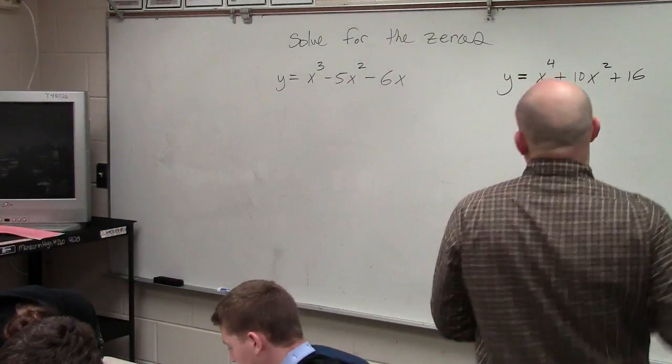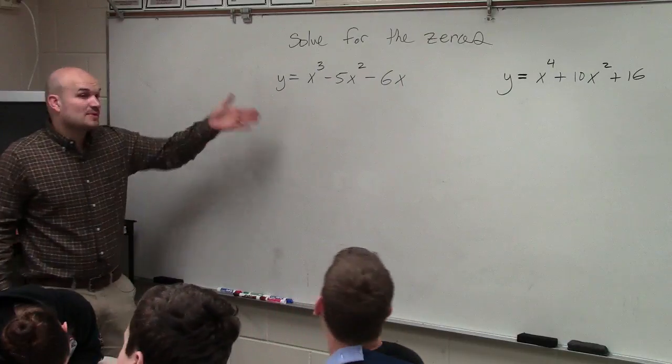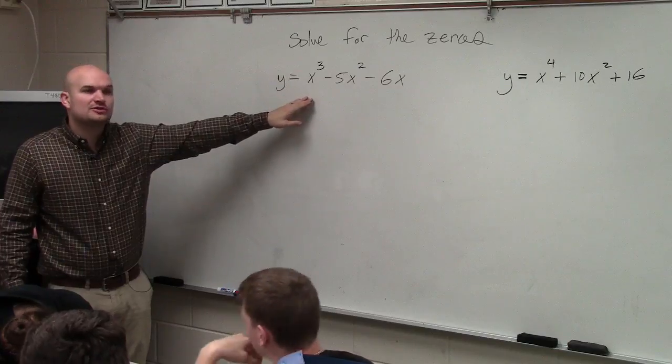So if you guys look at the first one, what we have is solving for the zeros. Now basically, when we're solving for the zeros, we always want to look to factoring. Because factoring typically is going to be our least time-consuming method to be able to determine the zeros.